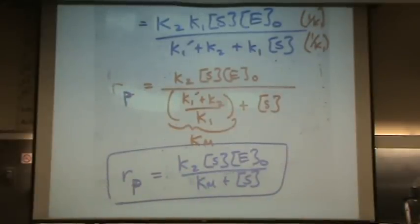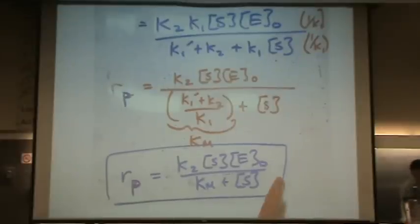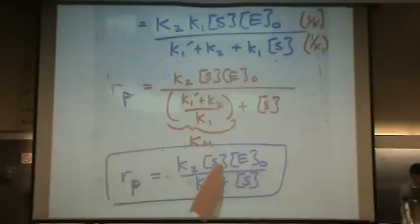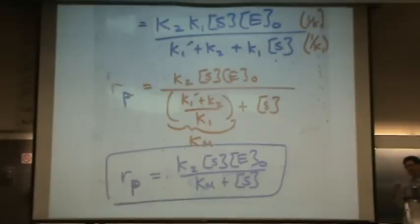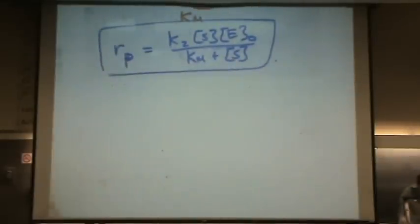We like this form because it has the total amount of enzyme, E₀ — we can find that. It has the amount of substrate S — we can find that. It doesn't have ES, the intermediate. It doesn't have the individual enzyme species. Why is that a big deal? Ask your biology teacher, but I'll tell you something.